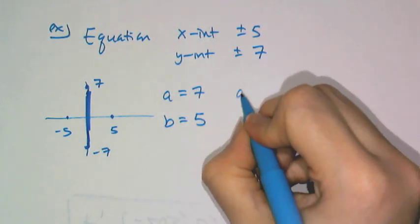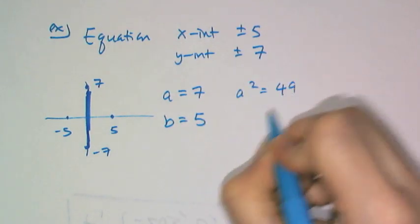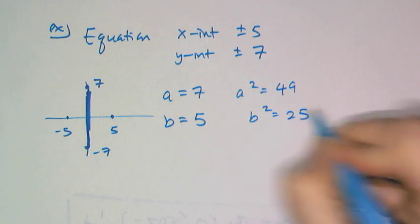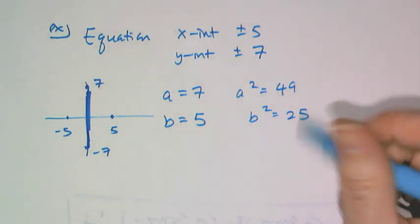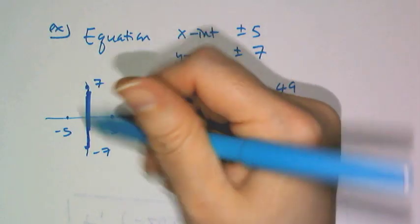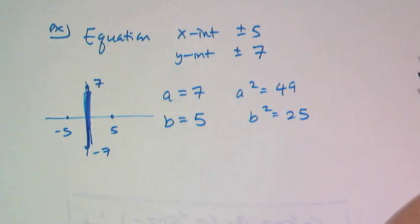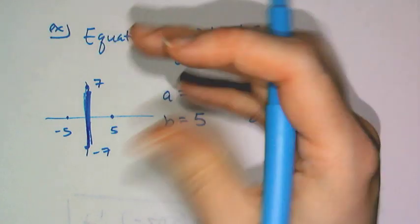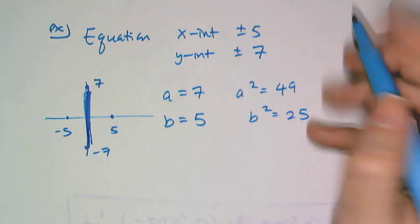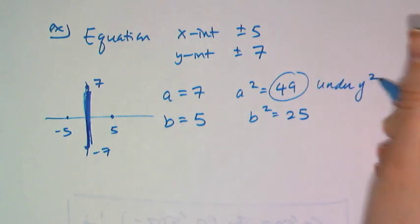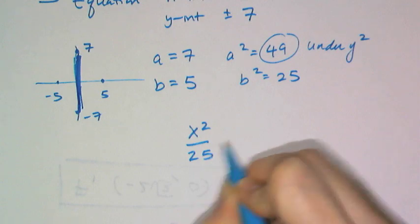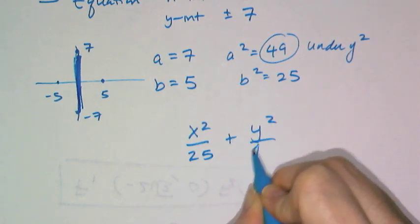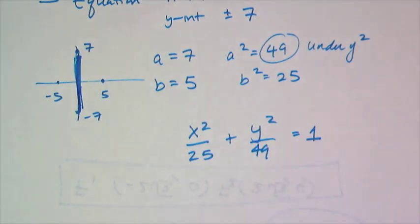That means a equals 7 and b equals 5, so a squared is 49 and b squared is 25. The hardest part is remembering under which variable the 49 and 25 go. Since I have a vertically oriented major axis, the larger number, 49, goes under y squared. So my equation is x squared over 25 plus y squared over 49 equals 1.